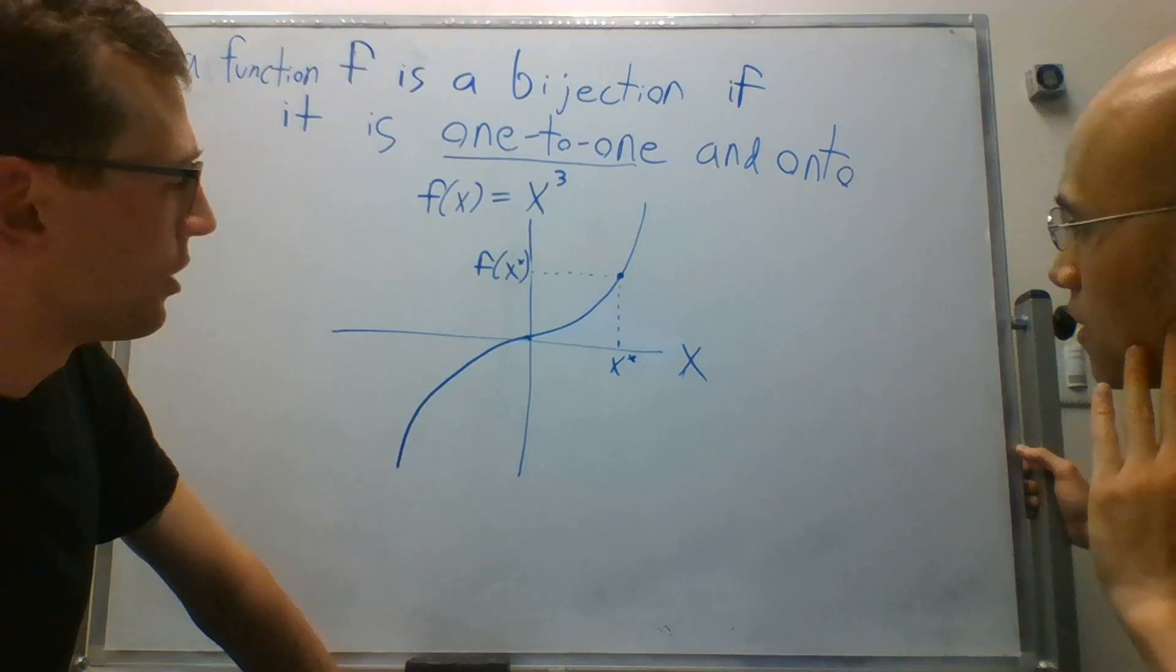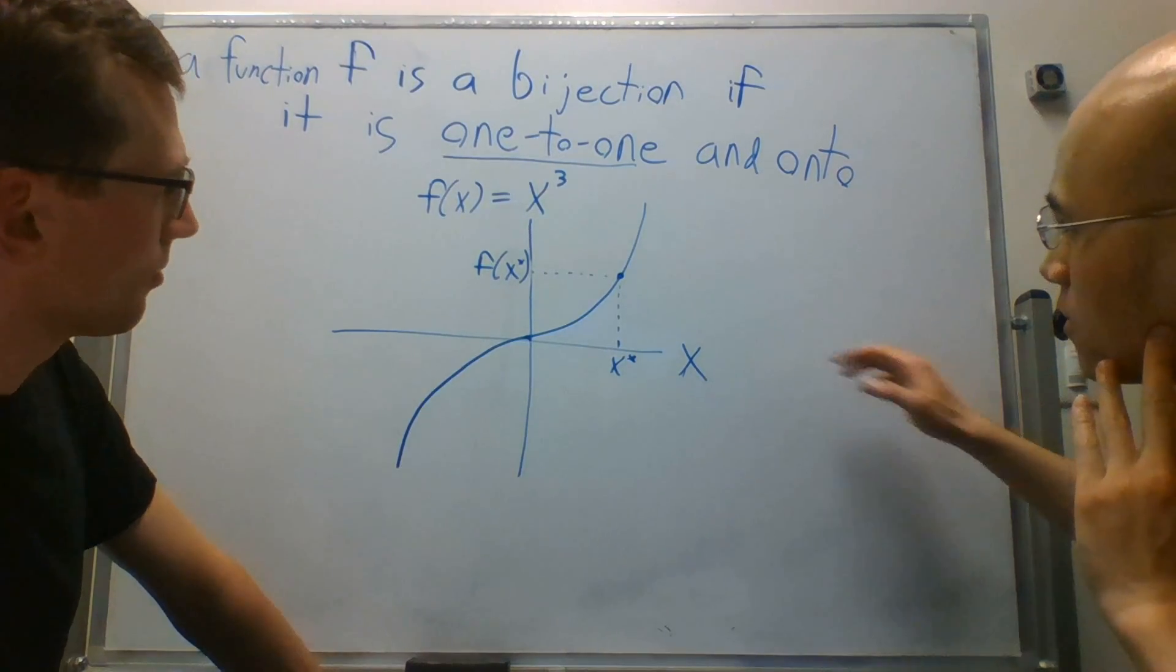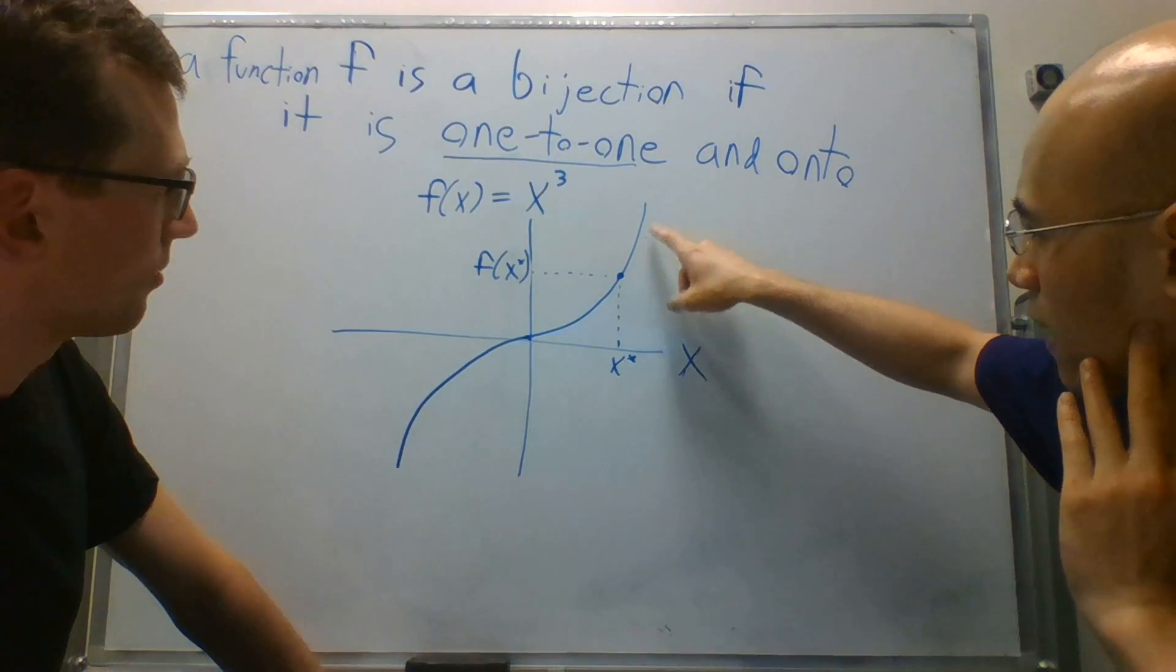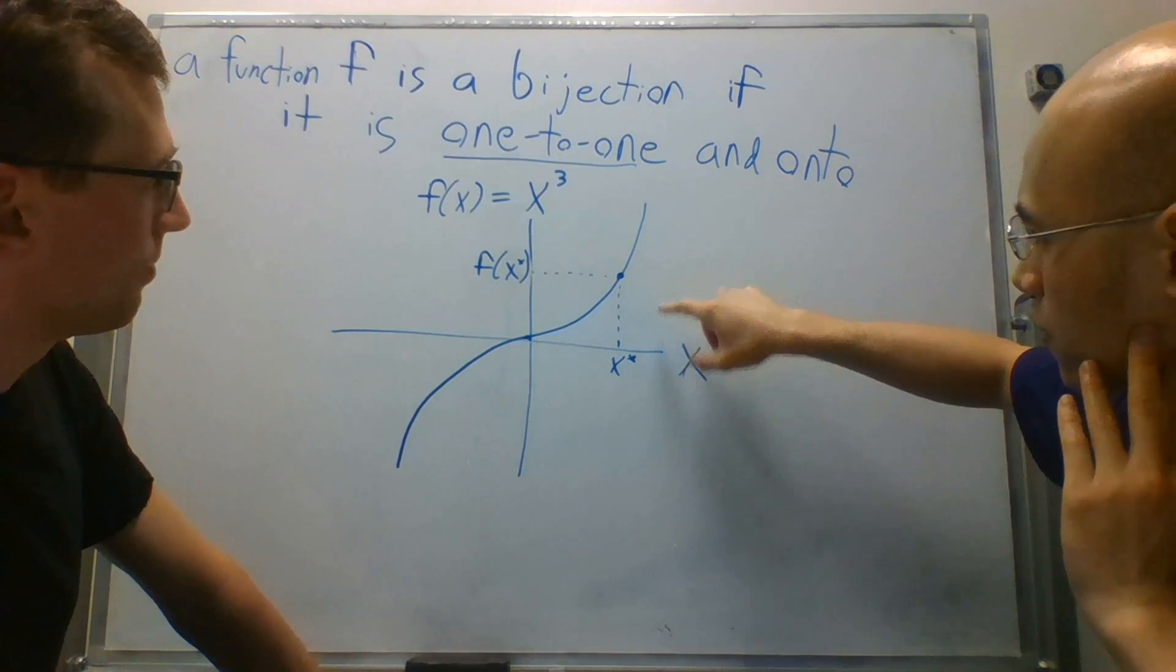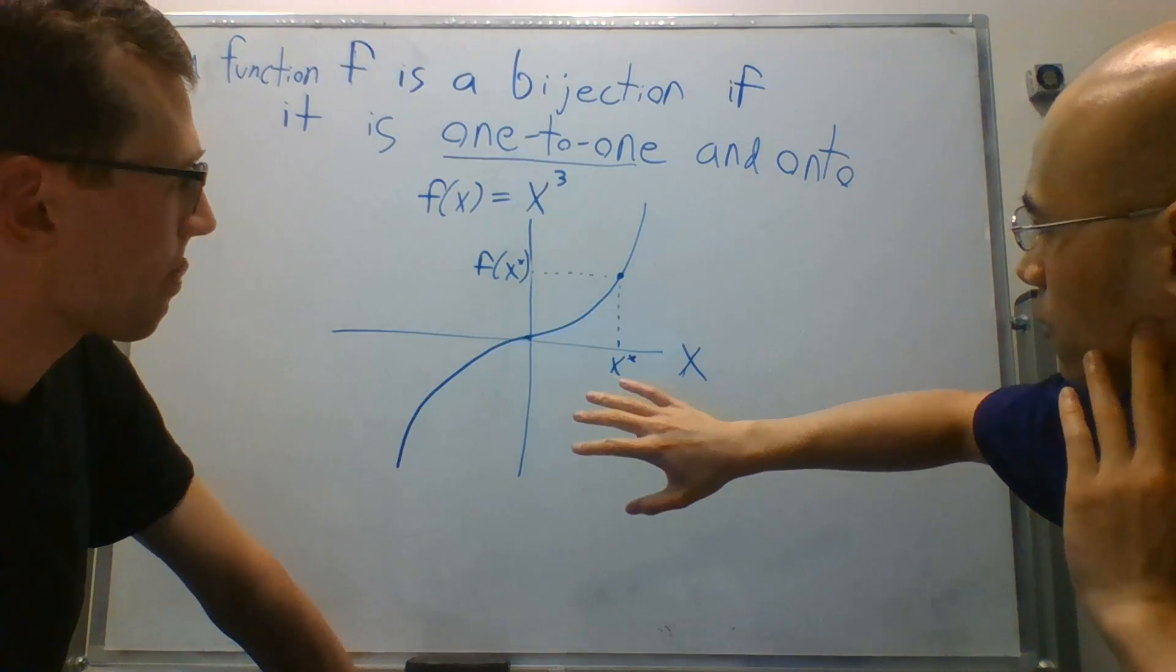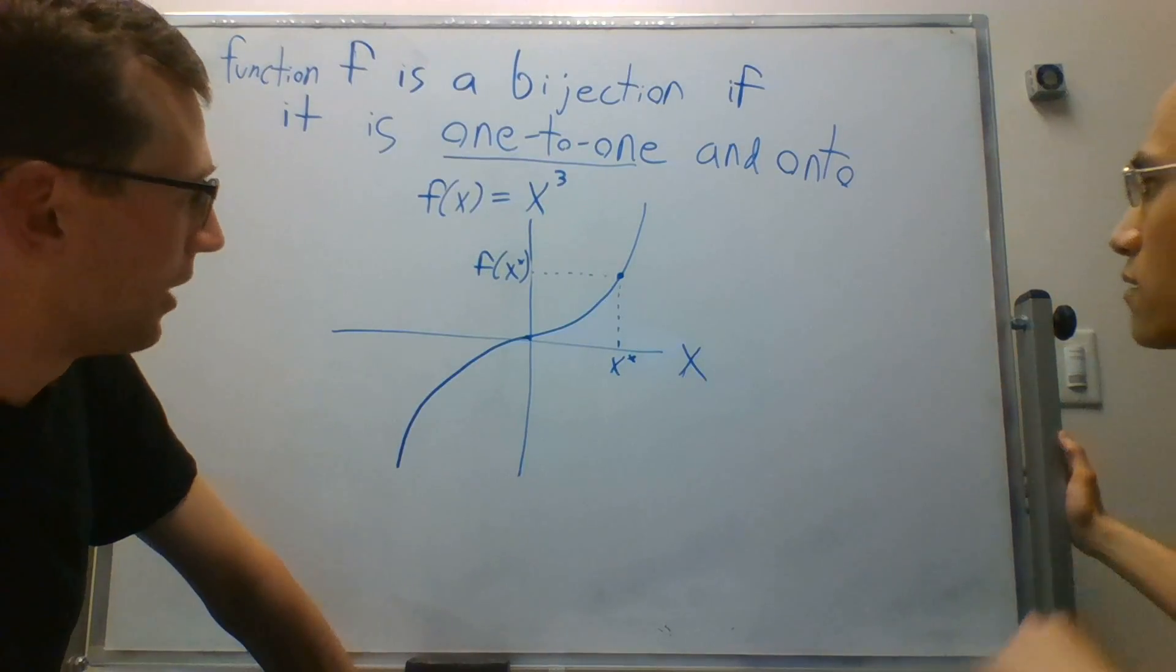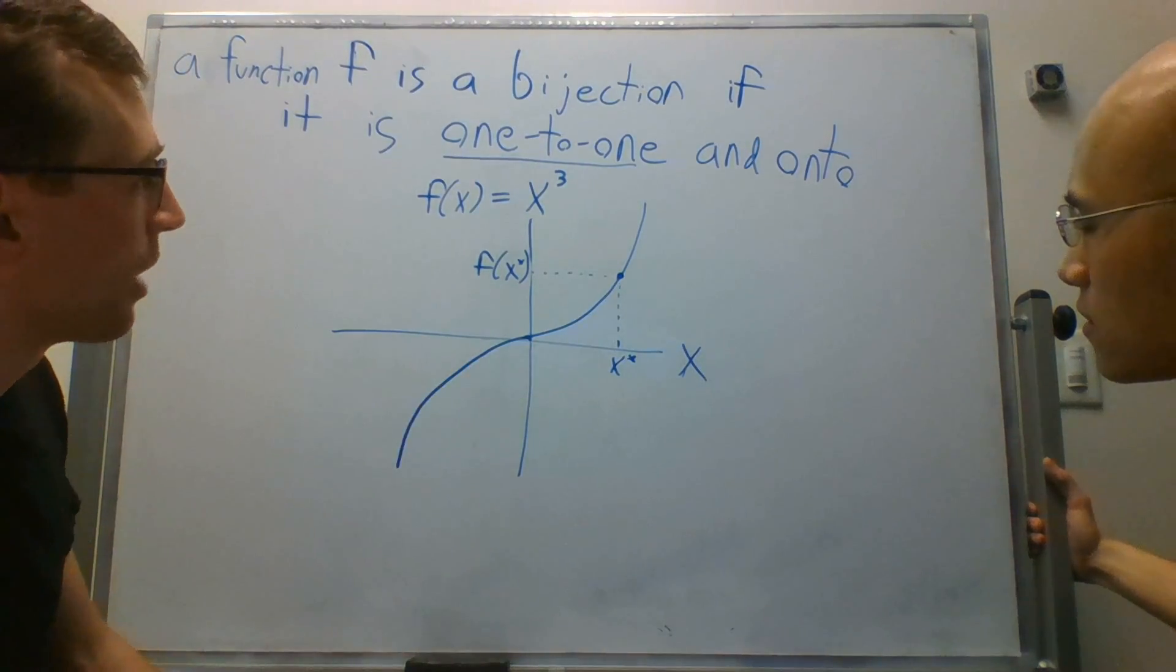Is this function onto? What do you think? Yes, because for every value in f of x, in the image, there is a value in x that maps to it. Right. Yes. And that's pretty easy to see, right?